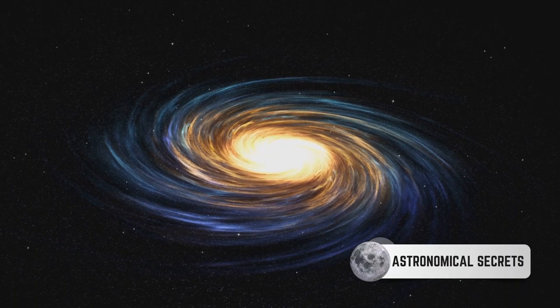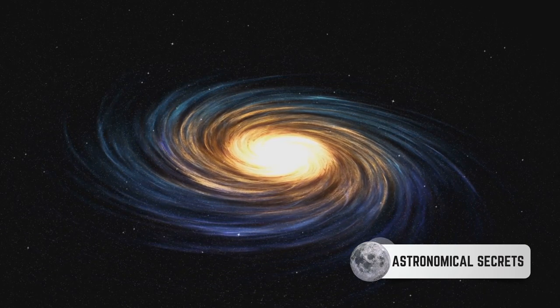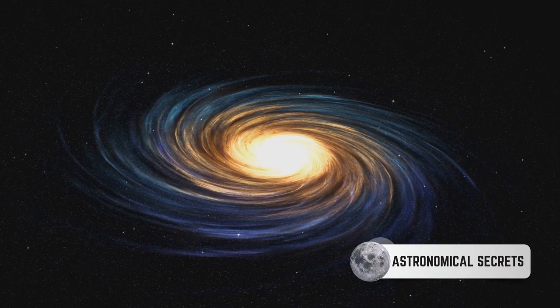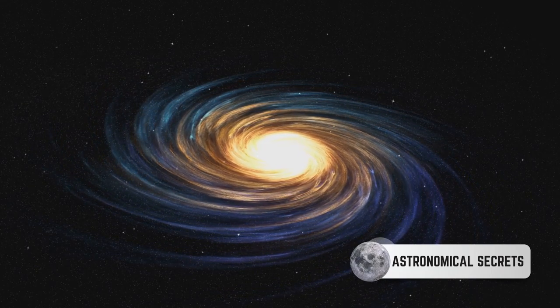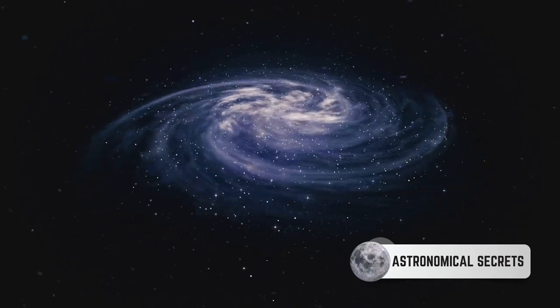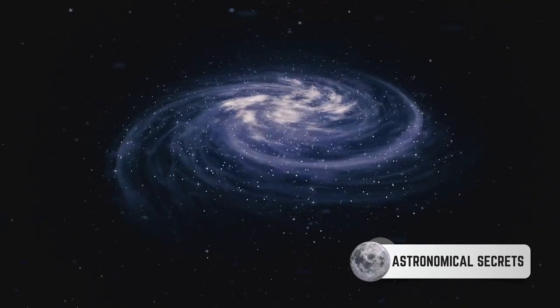The disk is also home to the spiral arms of the Milky Way, those majestic structures that swirl out from the galaxy's center. These arms are like cosmic highways guiding the motion of stars and gas. They are also cradles of star formation, where dense clouds of gas and dust collapse under their own gravity to ignite new stars.